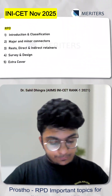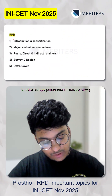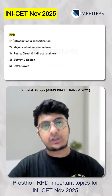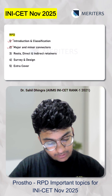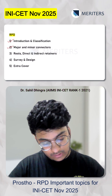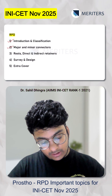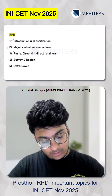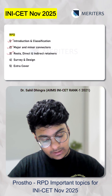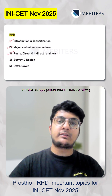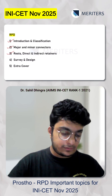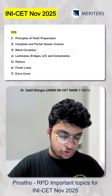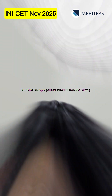For RPD, the most important are the first two chapters — the introduction and classification, and the major and minor connectors. And to an extent, your rests, direct retainers, and indirect retainers — the basic concepts. The first three chapters are the most important here.